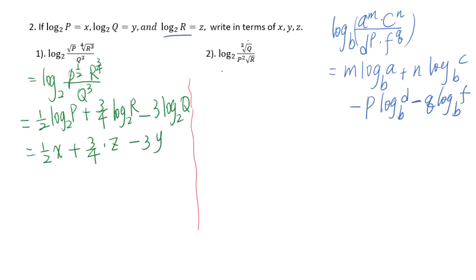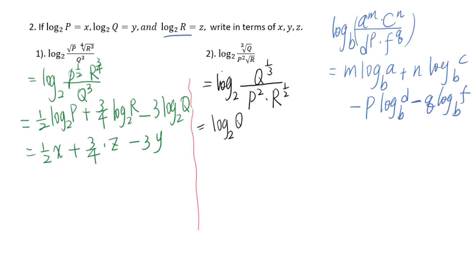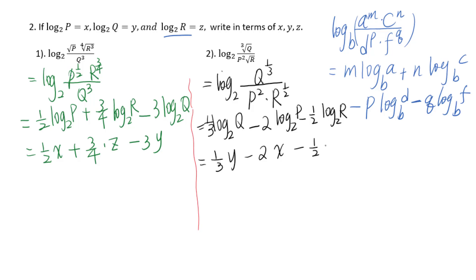For number 2: log base 2 of (the cubic root of q) over (p squared times the square root of r). First step, change every factor into exponential form: q to the one-third power over (p squared times r to the one-half power). Above the division line will be positive, so log₂(q) with one-third in front, then minus 2·log₂(p), minus one-half·log₂(r). Plugging in: (1/3)y - 2x - (1/2)z.